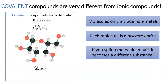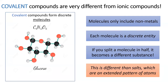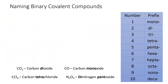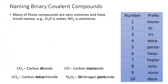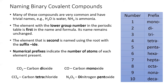Moving on to covalent compounds. Covalent compounds form discrete molecules, such as glucose — if you cut a molecule in half, you turn it into a different substance. This is different than salts, which are repeating patterns of ions; if you cut a salt crystal in half, you get two salt crystals of the same substance. For many covalent compounds we use the common name, such as water (H₂O) and ammonia (NH₃). When not using the common name, name the elements left to right on the periodic table, using prefixes to indicate how many atoms of each element are in the molecule. The last element ends in "-ide." Note that we don't use the prefix mono- on the first element.